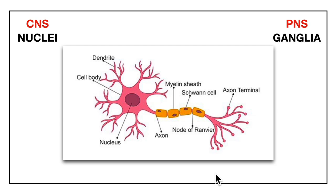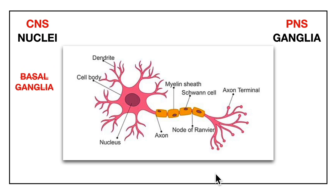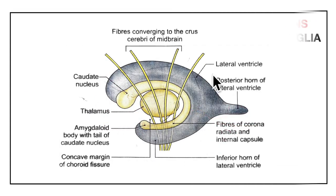Now the structure that we are learning in this video — the basal ganglia — is actually a structure of the central nervous system. So instead of basal ganglia we should be using the term basal nuclei, and in this video I will be using the correct term: the basal nuclei.